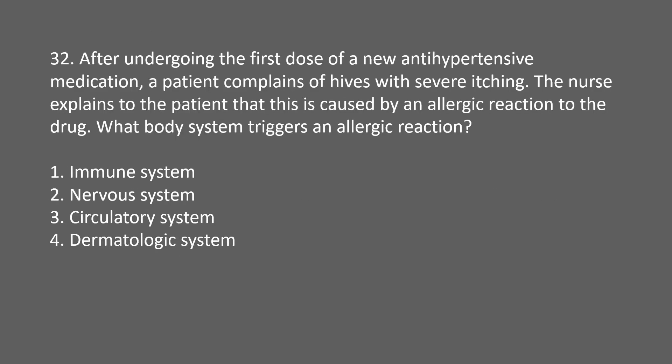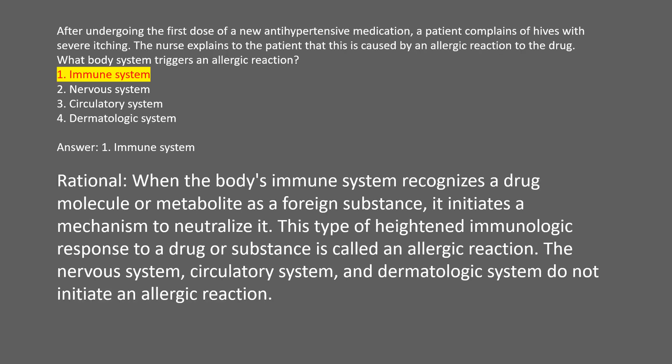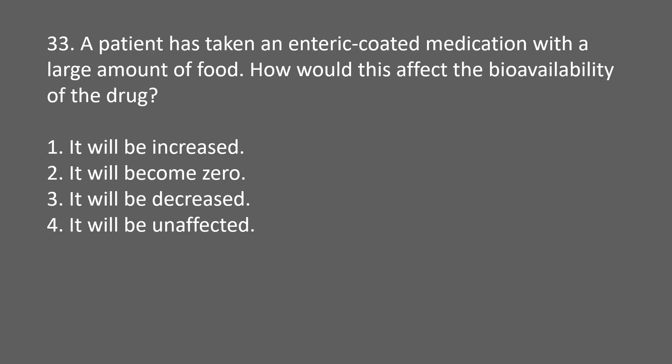After taking a first dose of a new antihypertensive medication, the patient complains of hives with severe itching. The nurse explains this is caused by an allergic reaction. What body system triggers an allergic reaction? 1. Immune system. 2. Nervous system. 3. Circulatory system. 4. Dermatologic system. Answer: 1. Immune system. Rational: when the immune system recognizes a drug molecule or metabolite as a foreign substance, it initiates a mechanism to neutralize it — this is called an allergic reaction.